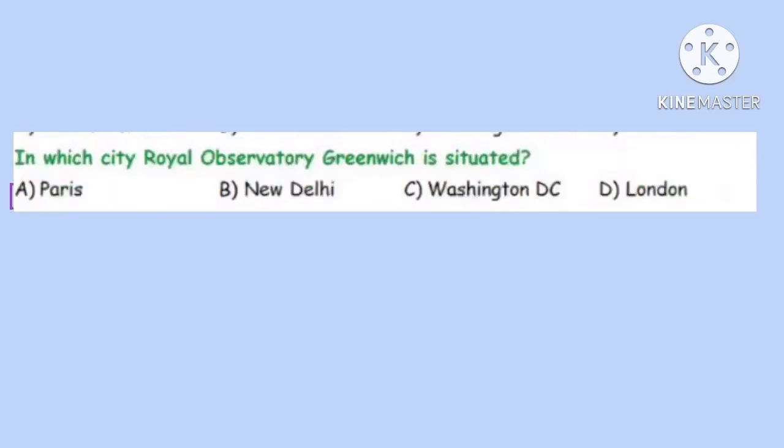Question 5. In which city is the Royal Observatory Greenwich situated? Correct option is D: London.